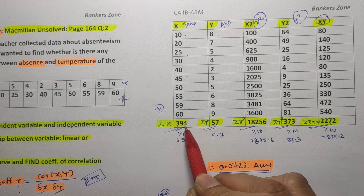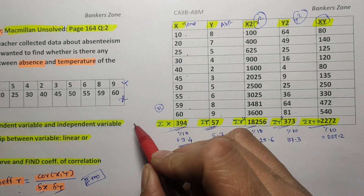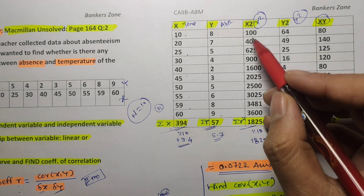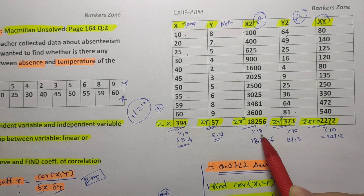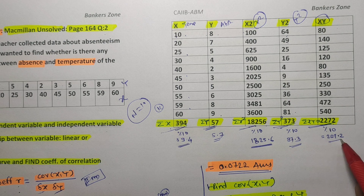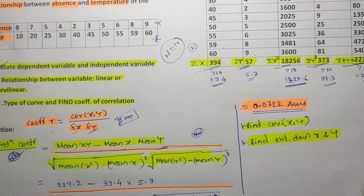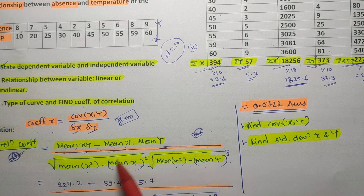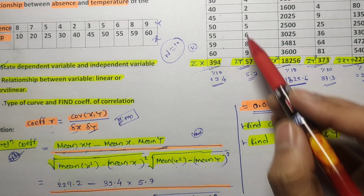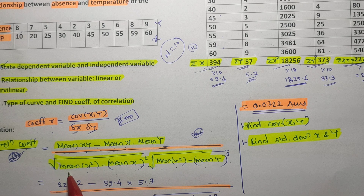Since n = 10, divide each summation by 10 to get the mean. For example, ΣX = 394, so mean(X) = 39.4; ΣY = 57, so mean(Y) = 5.7. Similarly, ΣX² = 18256 gives mean(X²) = 1825.6; ΣY² = 373 gives mean(Y²) = 37.3; and ΣXY = 2272 gives mean(XY) = 227.2. Now plug these values into the formula.